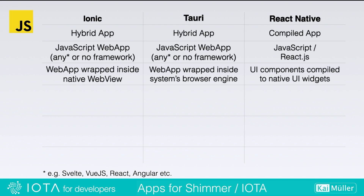Coming from Java and JavaScript, I listed up the frameworks I know: Ionic, React Native, and Tauri. Ionic and Tauri are hybrid apps — you write a web app and it is wrapped inside a browser engine or web view. React Native is a compiled app type where your JavaScript and UI components are compiled into native UI widgets.